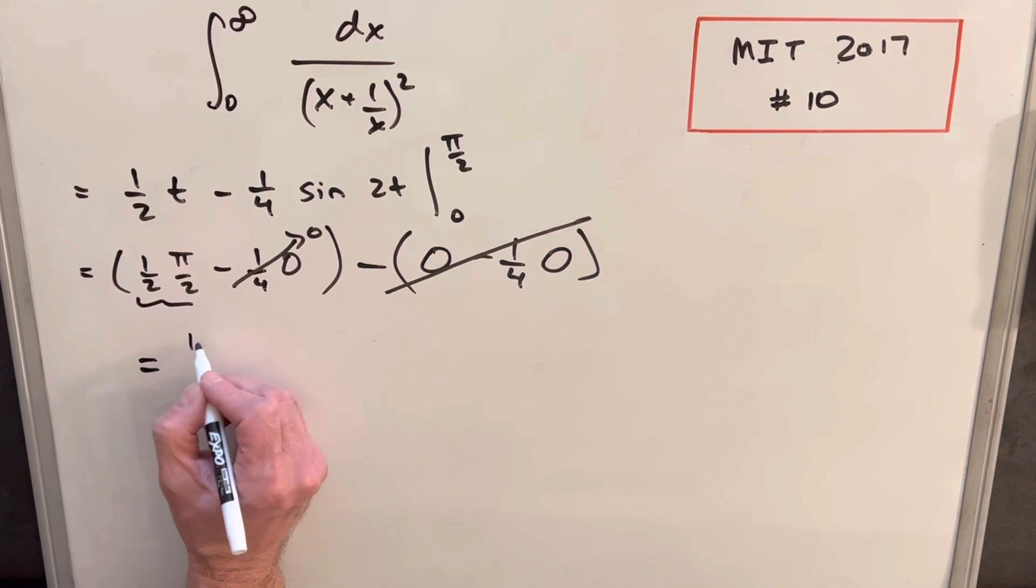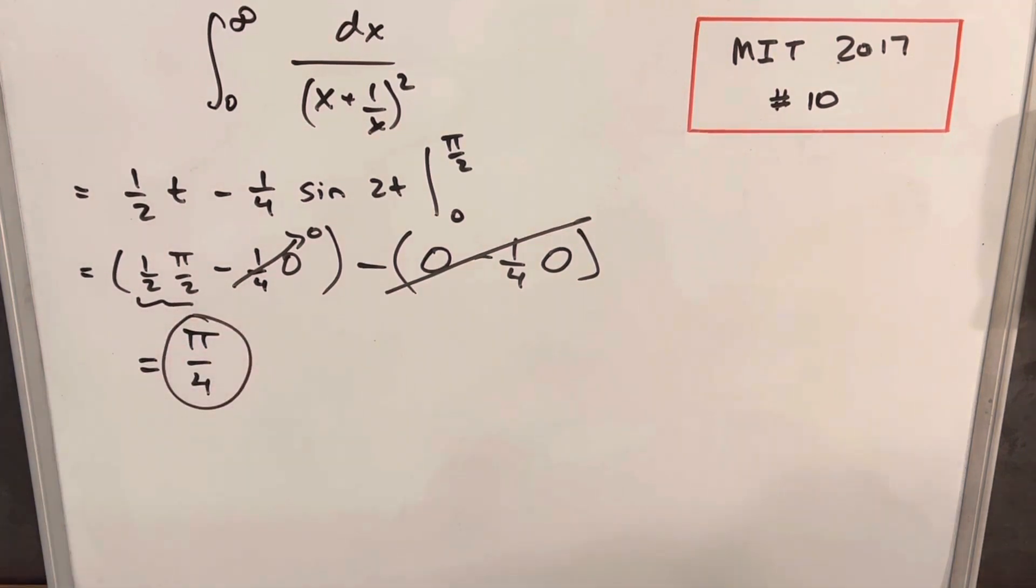And so for our final solution, we're just going to be left with pi over 4. That was MIT 2017, problem number 10. Thank you for watching. Please like and subscribe. Have a good day.